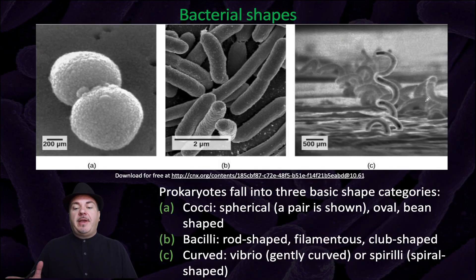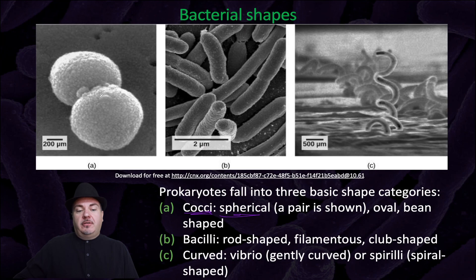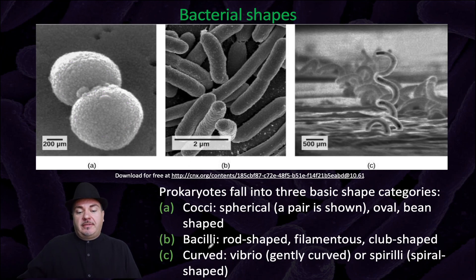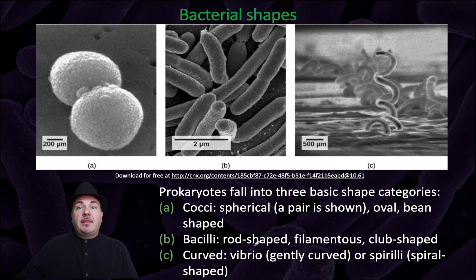Prokaryotes fall into three basic shape categories. Cocci or coccus, which is spherical — you can see a coccus-shaped cell in this image, and they can be spherical, oval, or bean-shaped. Bacillus or bacilli, which is rod-shaped, filamentous, or club-shaped. And then curved shapes: either vibrio, which is gently curved, or spirilli, which is spiral-shaped.